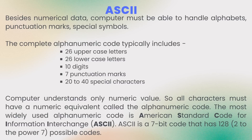So far we have talked about how numbers work in computers and how computers understand numbers. Besides numerical data, a computer must also be able to handle letters such as alphabets, punctuation marks, special characters, and so on — these form the complete character set of the English language. The complete set of characters or symbols is called alphanumeric codes. This typically includes 26 uppercase letters, 26 lowercase letters, 10 digits from 0 to 9, 7 punctuation marks, and special characters. Now, a computer understands only numerical values.